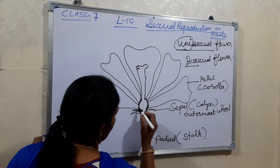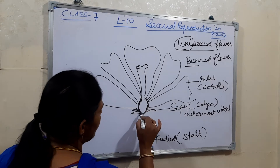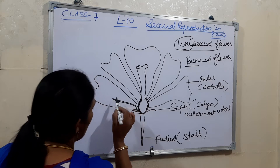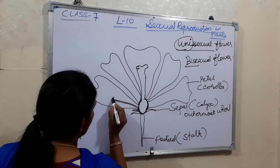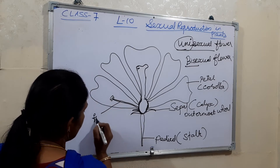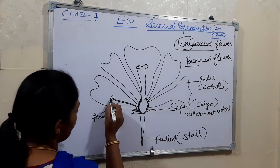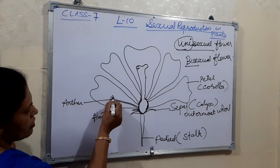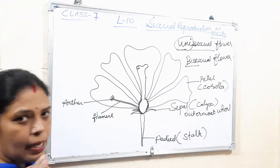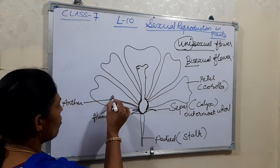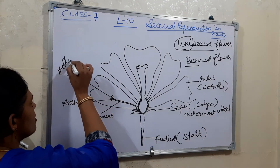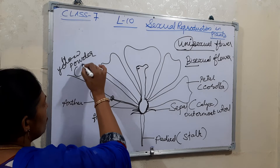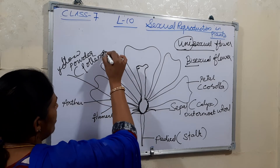Inside you can see some long filaments which contain organs at their tips. This is actually the filament and it contains the anther. In the anther you can see fine yellow powdery substances — these yellow powdery substances are known as pollen grains.